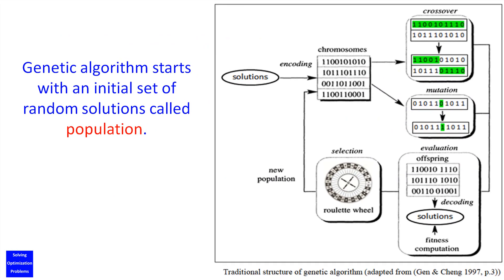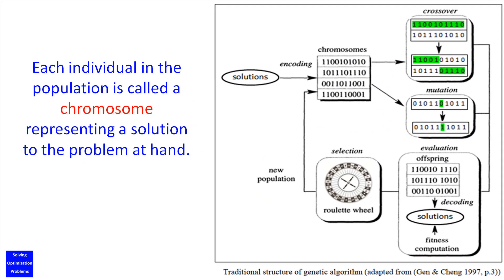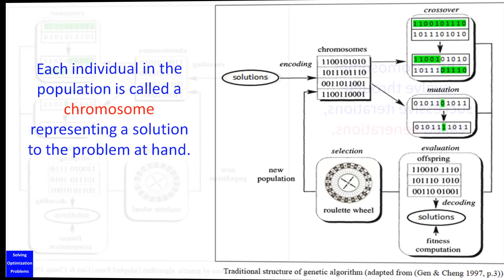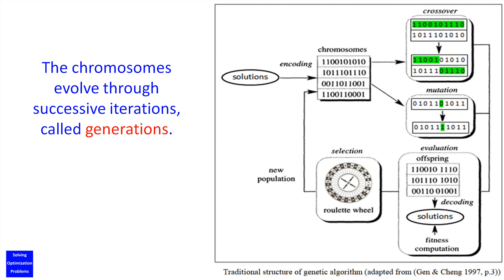Genetic algorithm starts with an initial set of random solutions, called population. Each individual in the population is called a chromosome, representing a solution to the problem at hand. The chromosomes evolve through successive iterations, called generations.